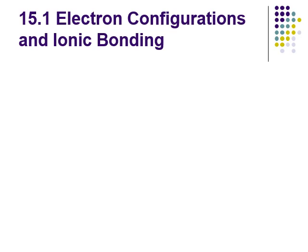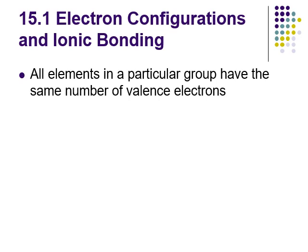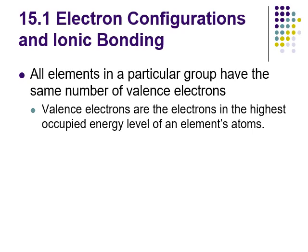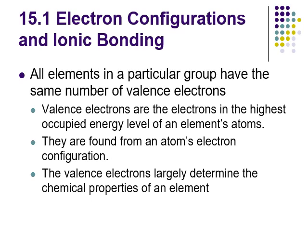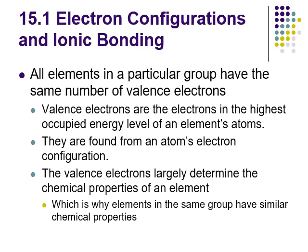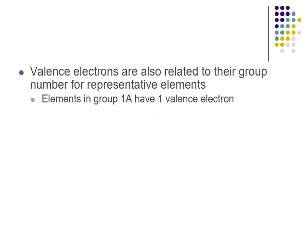We're going to start by talking about the relationship between electron configuration and how ionic bonding takes place. All elements in a specific group have the same number of valence electrons. Valence electrons are the electrons in the highest energy level that an atom has, and we can find that from an atom's electron configuration. The number of valence electrons plays an incredibly large role in the chemical properties of an element, which is why elements in the same family have similar chemical properties. We can easily find the number of valence electrons simply by looking at the group number.